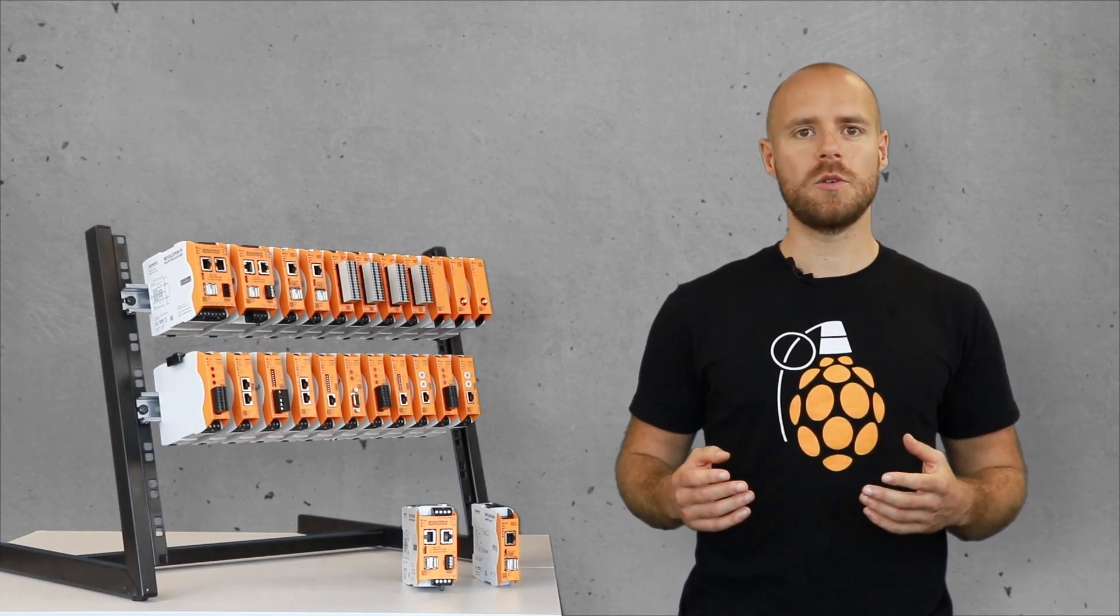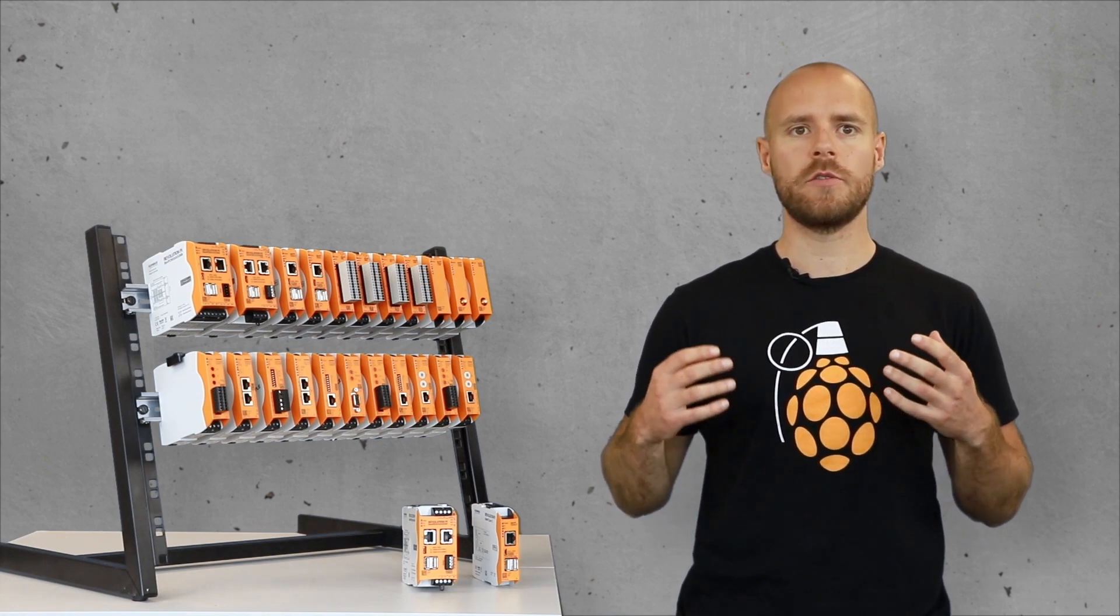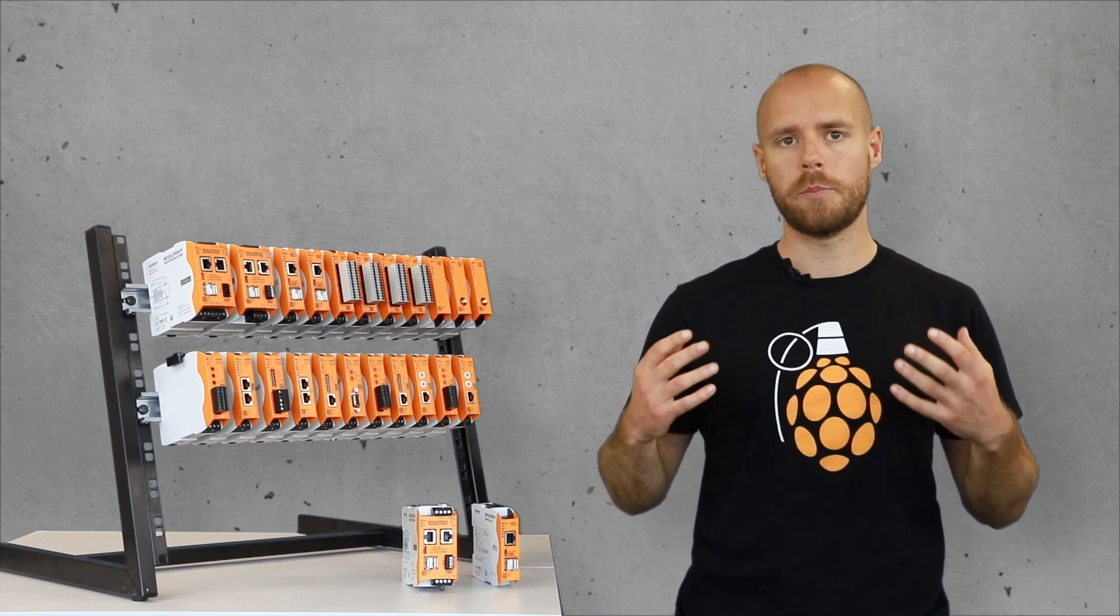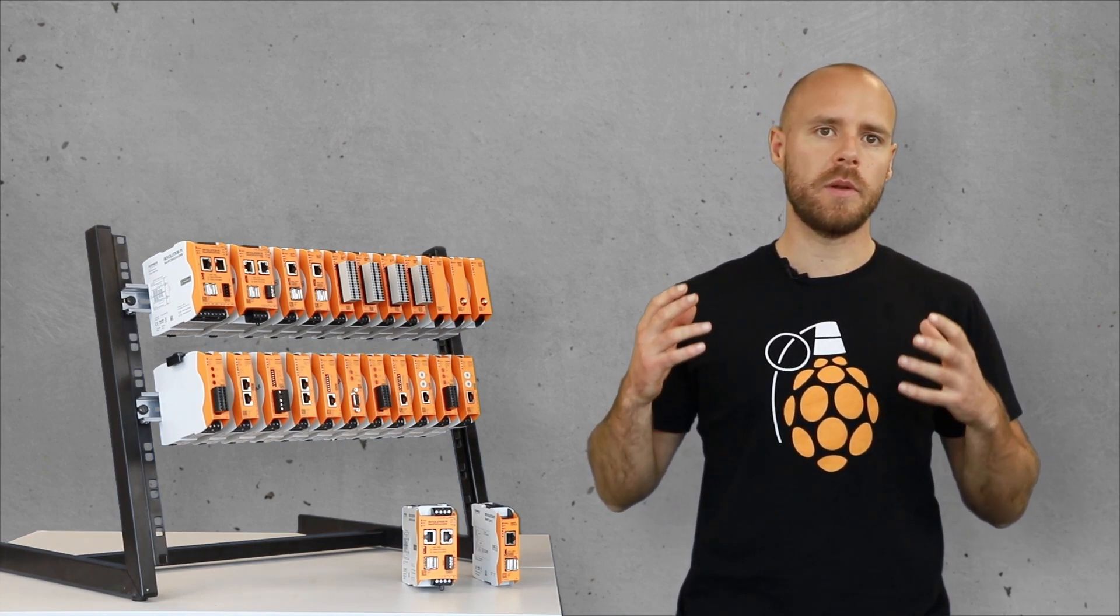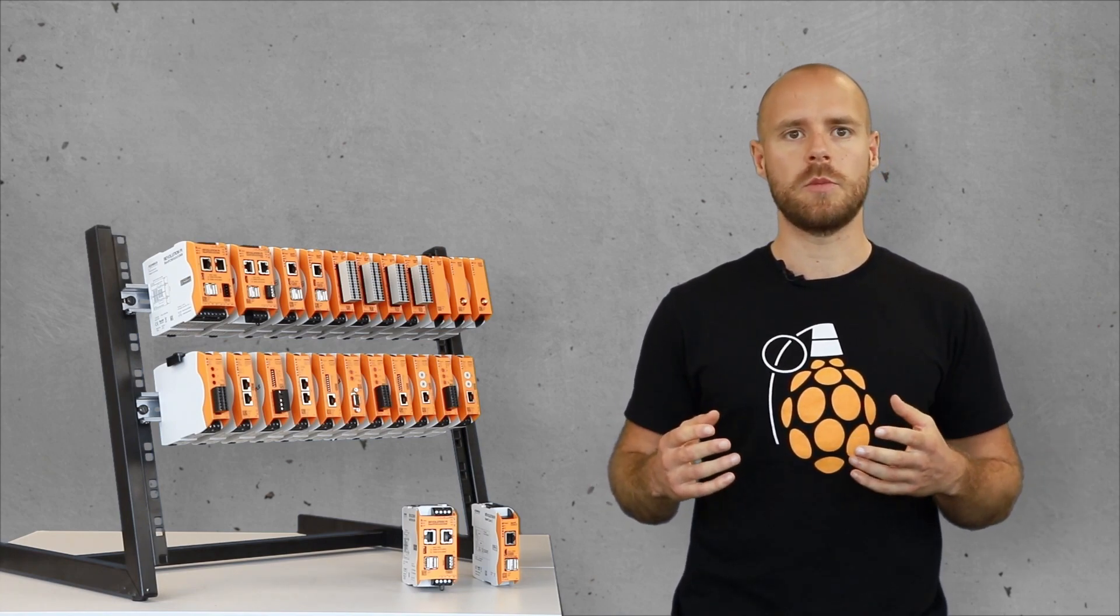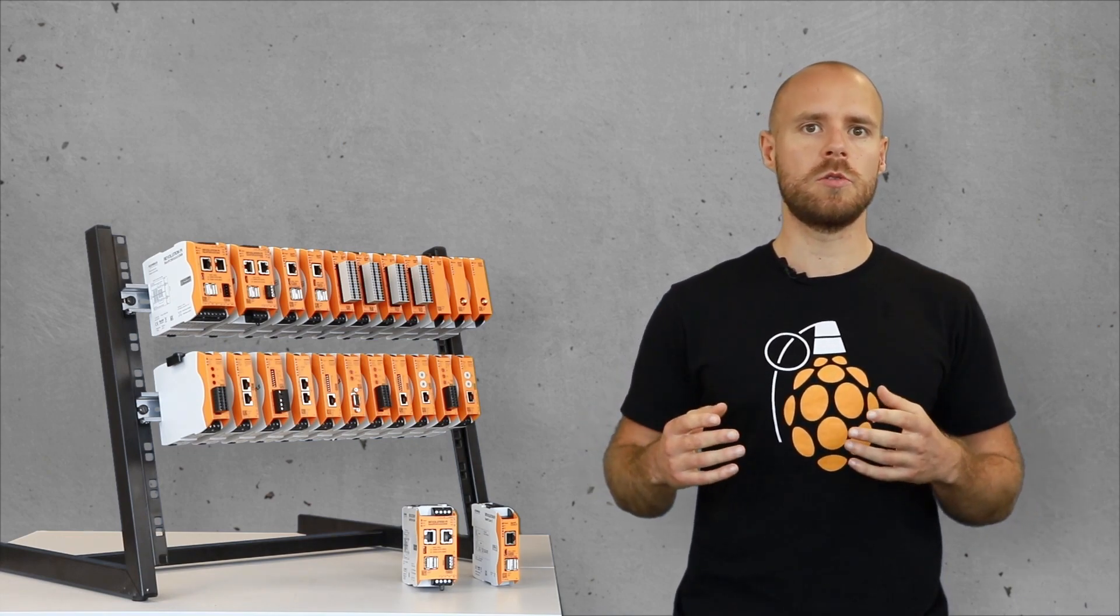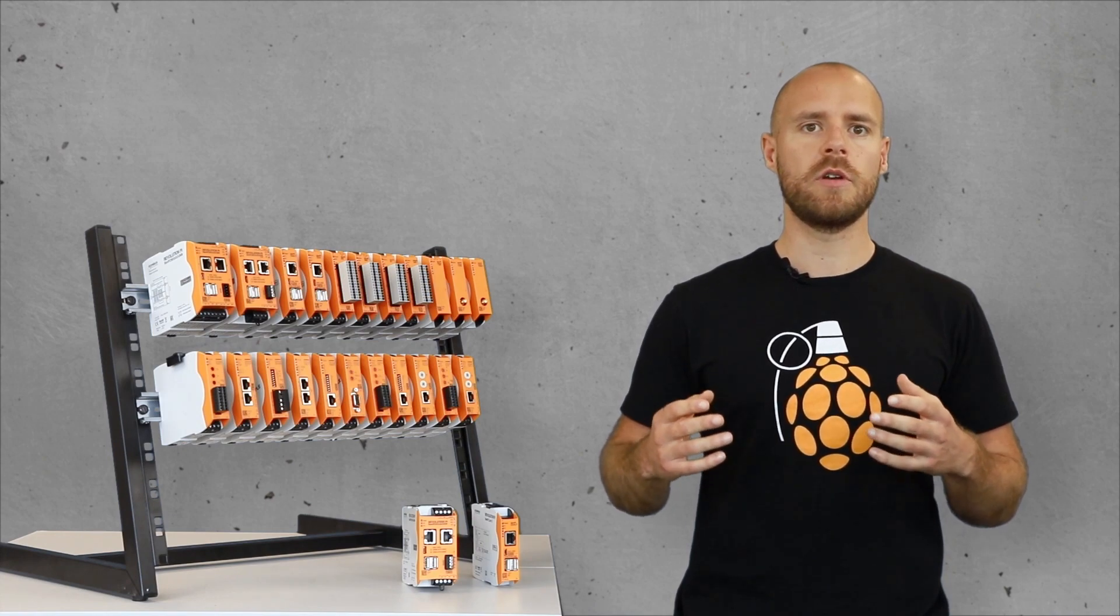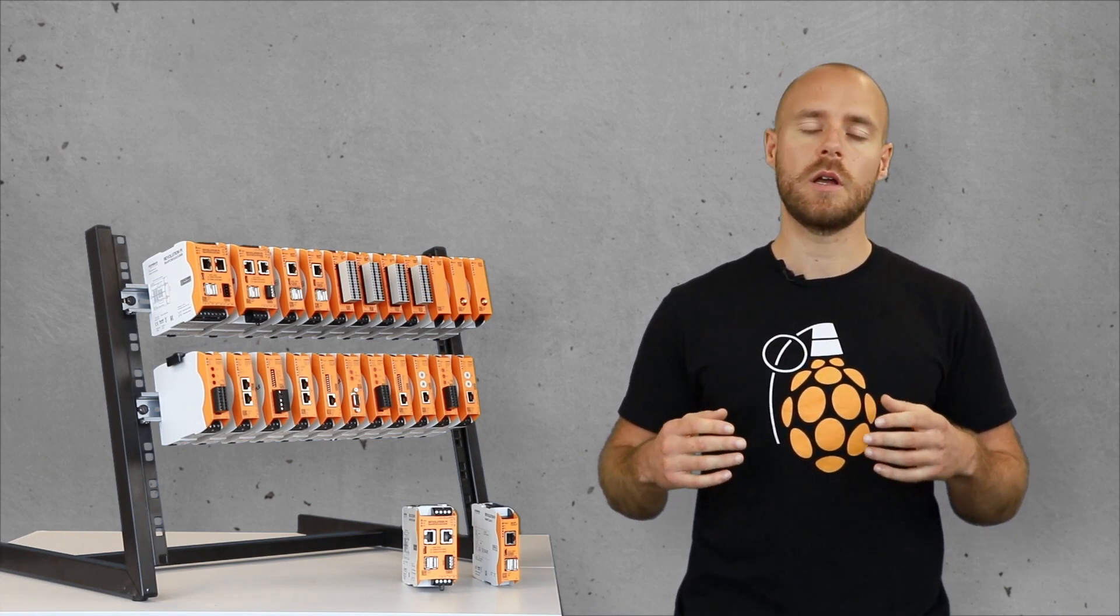After the hardware has been put together, the modules have to be configured in our configuration software called Pictory. Pictory is a browser-based application which is already pre-installed on each of our base modules. Pictory helps you to define the positioning of the expansion modules and to give symbolic names to the input and output channels, amongst others.